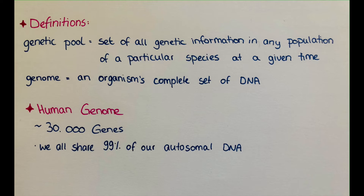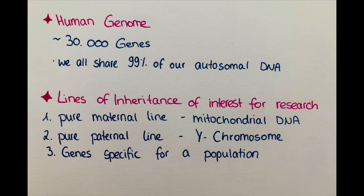Scientists are usually not interested in finding one individual's DNA from their ancestors 500 years ago. But they are interested in three lines of inheritance. The first is the pure maternal line: my genes, then my mom's genes, then her mom's genes, then her mom's genes, and so on.